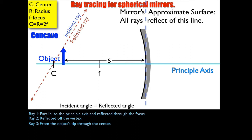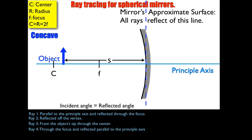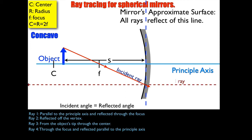The fourth and final ray is the opposite of the first one. The first ray was parallel and then through the focus; this one goes through the focus first and then reflects parallel to the principal axis. Starting from the tip of the object, go through the focus down until it hits the mirror — that's the incident ray. The reflected ray is drawn very long and parallel to the principal axis.